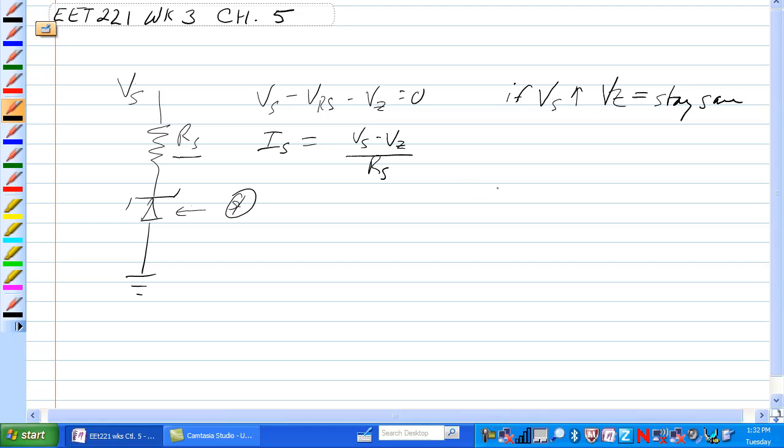Let's look at this in a circuit now. We have an RS, source resistance, well not necessarily, but a series resistance with the source and a Zener here.